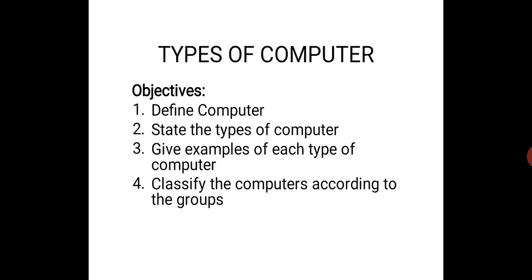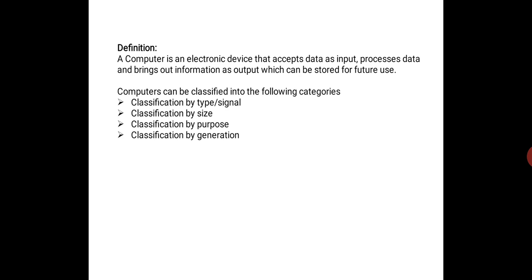In our previous lesson, we looked at the topic data processing, and we defined data processing as the conversion of data to meaningful information. A tool for processing data is the computer. So, what then is a computer? A computer is an electronic device that accepts data as input, processes data, and brings out information as output, which can be stored for future use.